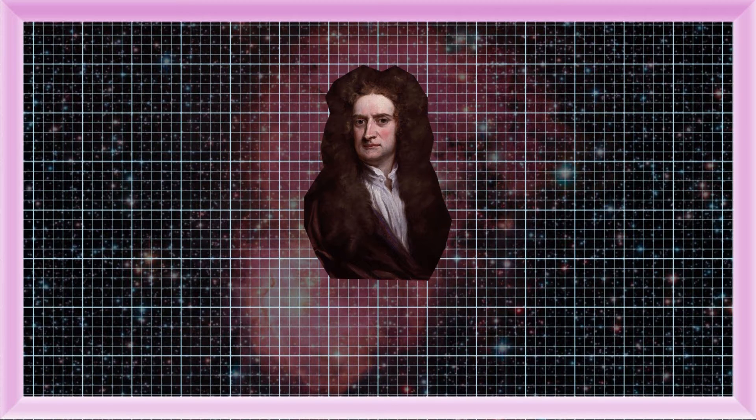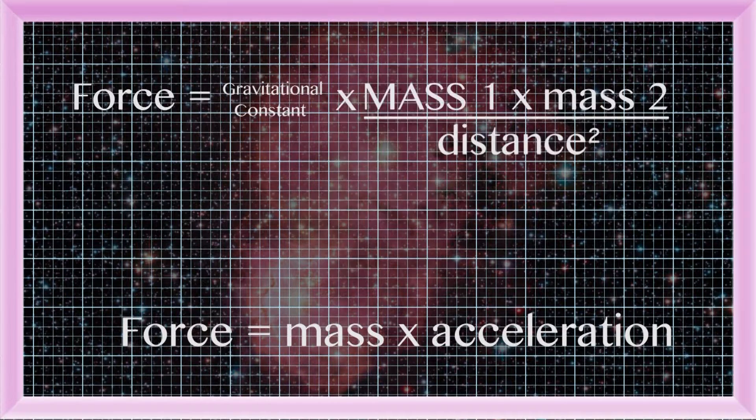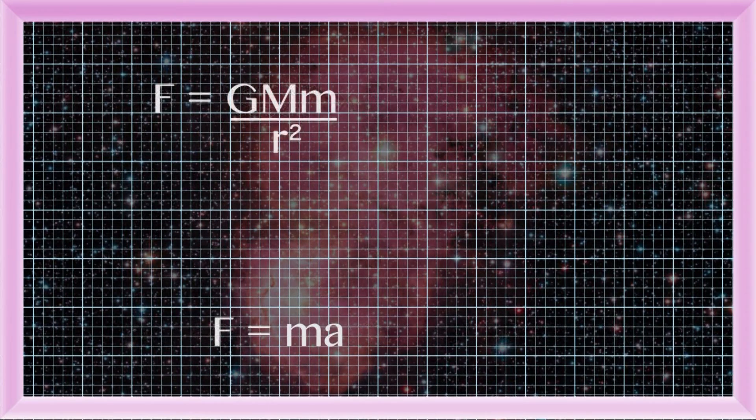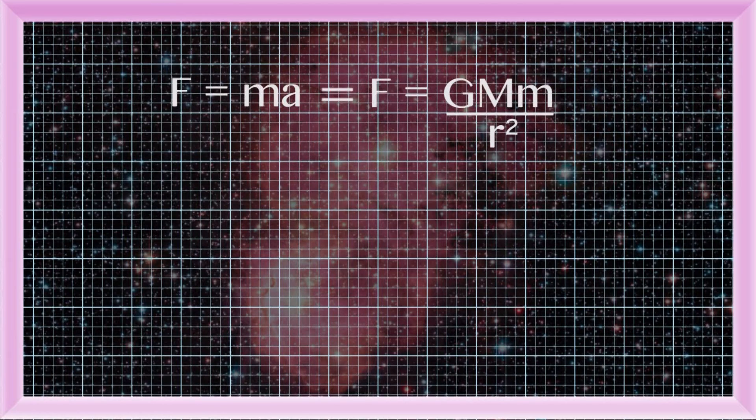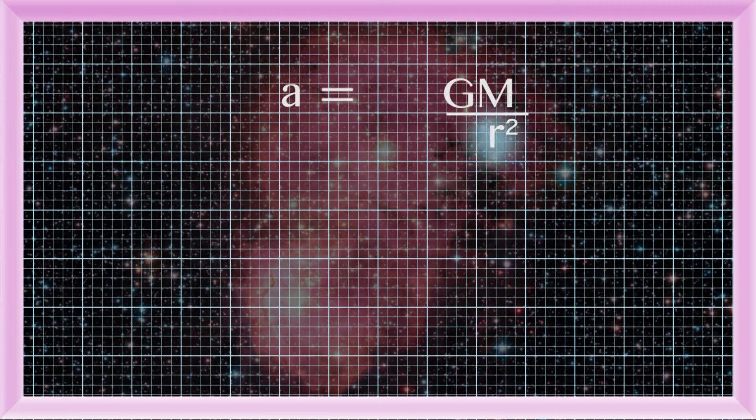Newton had another equation that is true for all forces: force equals mass times acceleration. Comparing these side by side, you can see that you accelerate toward the black hole by the gravitational constant times the mass of the black hole divided by your distance squared. You can do these calculations for any two objects in the universe, as long as you know their mass and how far apart they are from each other.